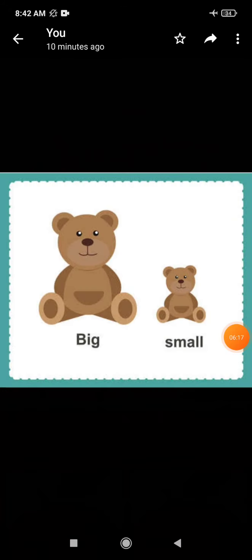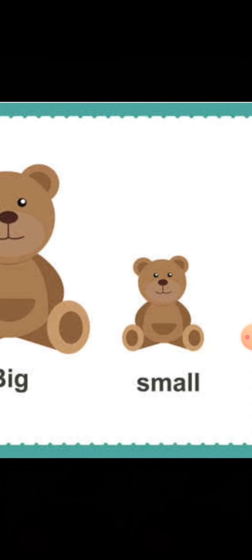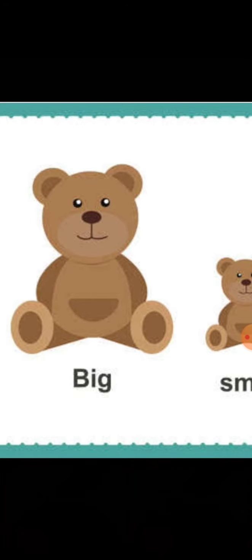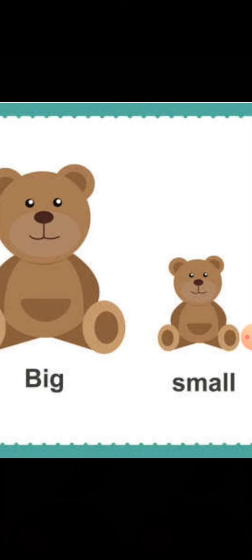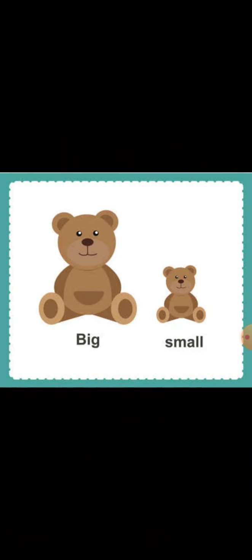See these two teddy bears. First teddy bear is big and second one is small. Pahla teddy bear jo hai woh kya hai? Bada hai size mein. And second one is small. So I hope, children, now you all have understood about big and small. Thank you.